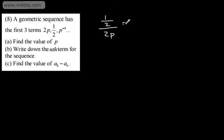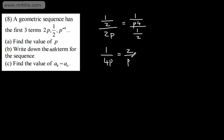In question 8, a geometric sequence has the first three terms 2p, one half, and p to the negative 4. In part a, we need to find the value of p. We can say that one half divided by 2p equals p to the minus 4 divided by one half. I can write this as 1 over 4p equals 2 over p to the fourth. Multiplying both sides by p to the fourth and by 4, we get p cubed equals 8.